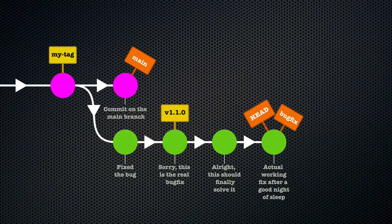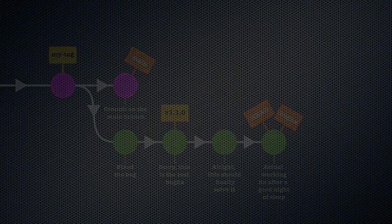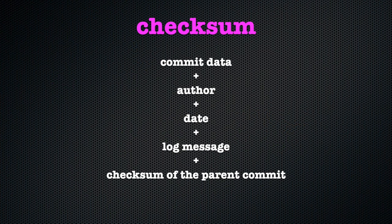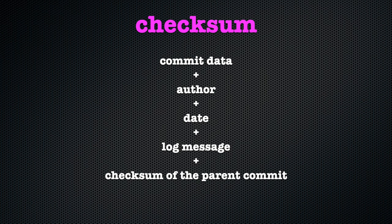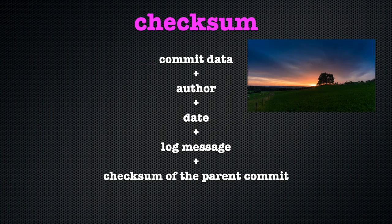Then there are the commit objects. These are, of course, the objects we've been paying most attention to so far. In chapter 6 we explained that the commit objects hold the data itself, the order, the date, the log message, and the checksum of the parent commit. What that means under the hood is the ID of the tree object that holds the information about the data stored for this commit.